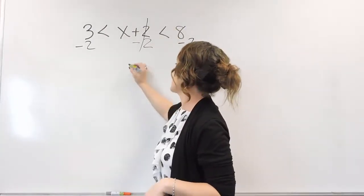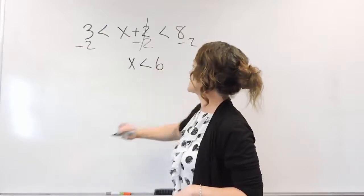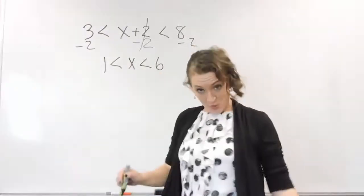So 2 minus 2 cancels. I'm going to drop down x. It's less than, let's see, 8 minus 2 is a 6, and 3 minus 2 is a 1. Drop down your symbols along with them.